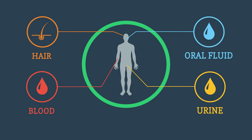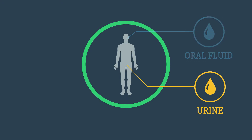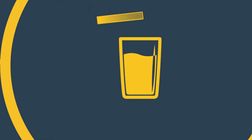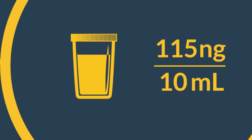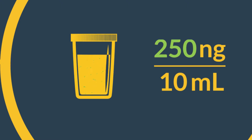Only small amounts of cannabis are incorporated into hair, and the detection times in blood and oral fluid are short. Therefore, drug testing for cannabis is usually performed in urine. In order to detect cannabis in a urine sample, the cannabis concentration must be above a certain threshold.